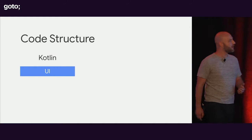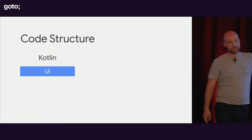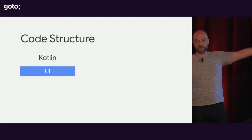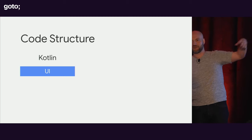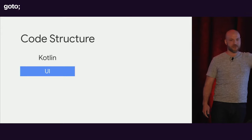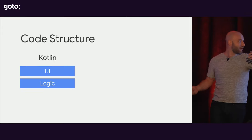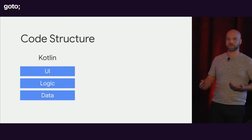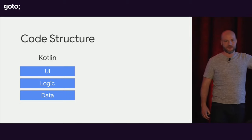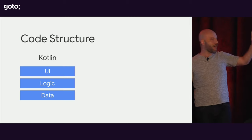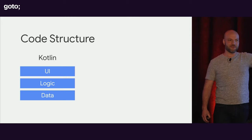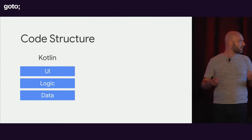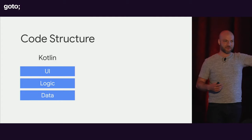Right now, if you make mobile apps in your company, your code structure probably looks something like this. You have an Android team that writes in Kotlin or the Java programming language, and they make a UI layer, then below that a logic layer, and then a data layer. These are like MVC, MVVM, MVP — you can put a bunch of different acronyms on these, but they all come out the same. There's always these three boxes.